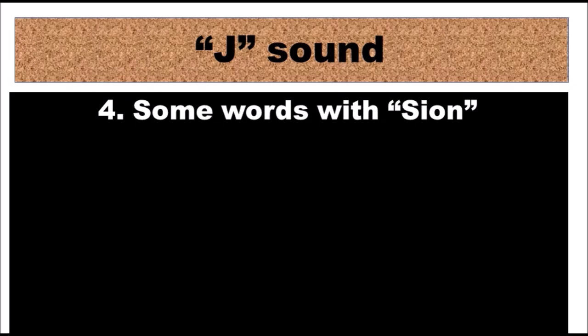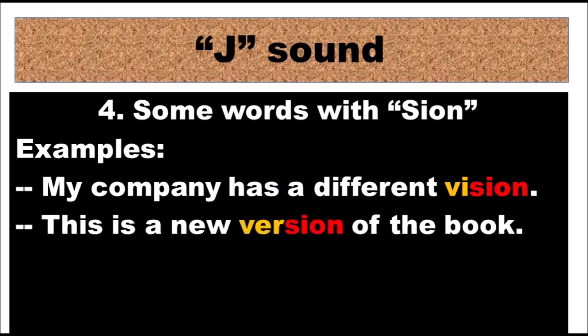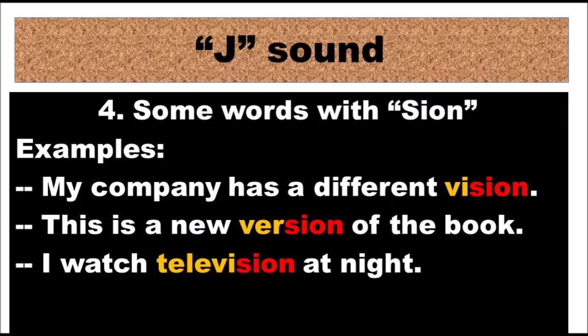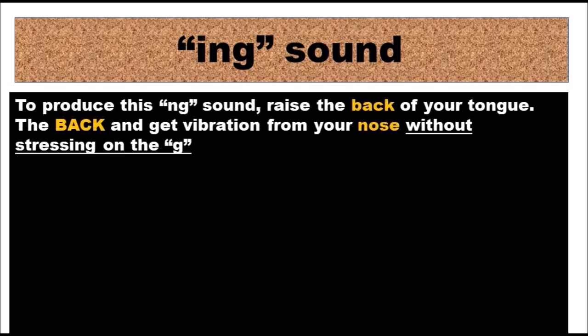The last case for producing the J sound is words with 'sion'. For example: 'My company has a different vision' — vision, not vision. 'This is a new version of the book' — version. 'I watch television at night' — television. Let's say them again: vision, version, television.